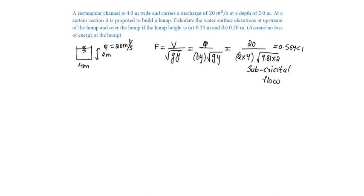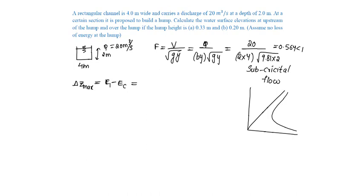Let us find the maximum depth of hump for which the upstream water level will not change, i.e., the choking condition will not occur. This is equal to E1 minus EC. From the specific energy graph, EC and E1 are identified, and ΔZ_max = E1 - EC.